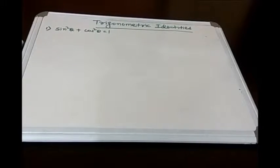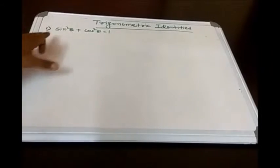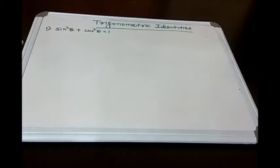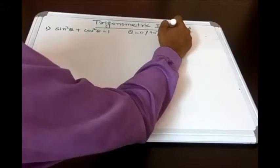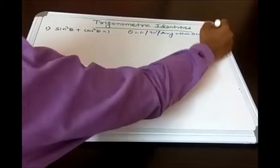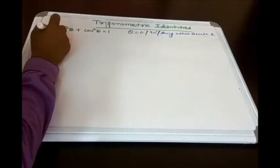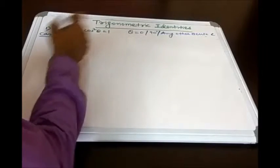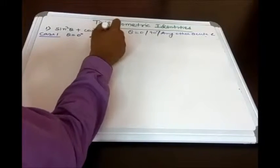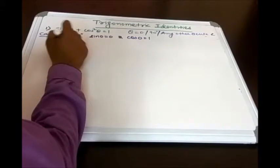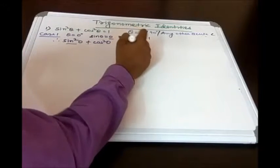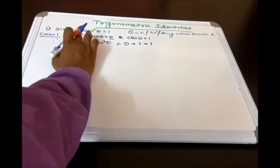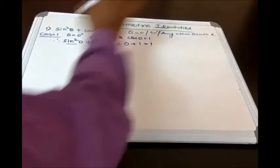Now we will start with our first trigonometric identity — the very common one: sin²θ + cos²θ = 1. Three cases arise: theta can be 0°, 90°, or any other acute angle. For Case 1, when θ = 0°: sin 0 = 0 and cos 0 = 1. Therefore sin²0 + cos²0 = 0 + 1 = 1. So this identity holds good for θ = 0°.